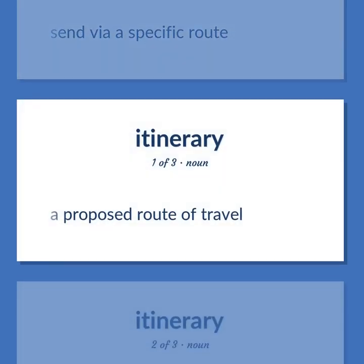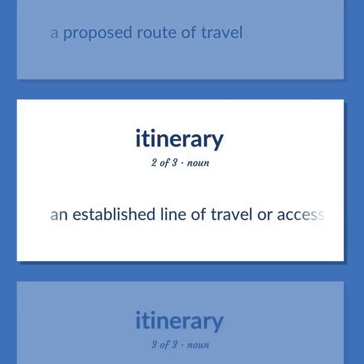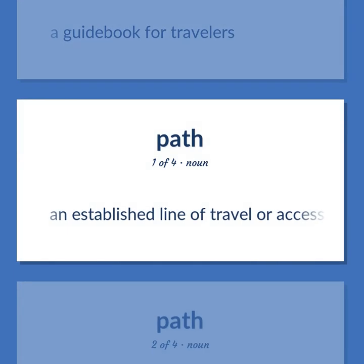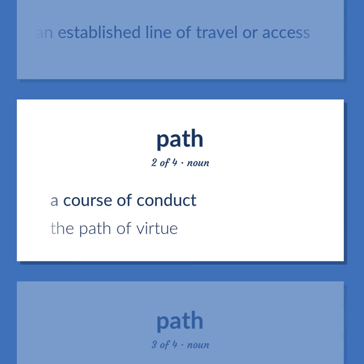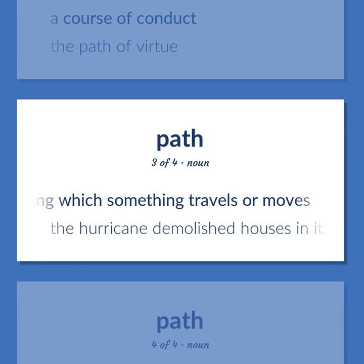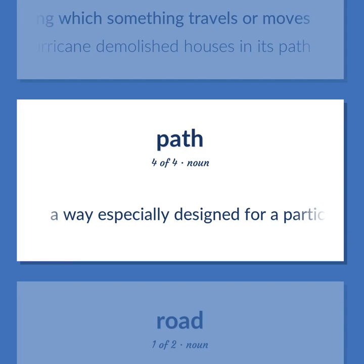A proposed route of travel. An established line of travel or access. A guidebook for travelers. A course of conduct. The path of virtue. A line or route along which something travels or moves. The hurricane demolished houses in its path. A way especially designed for a particular use.